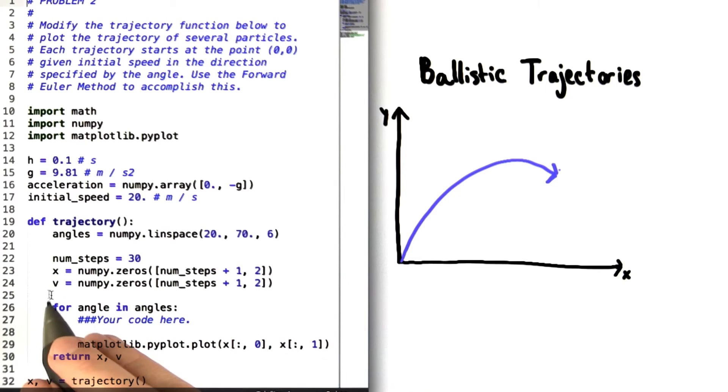The next step is to create variables for position and velocity. Each of these is an array with a number of rows equal to the number of steps that are going to be taken, plus one, and two columns.